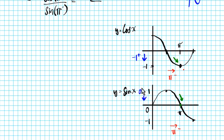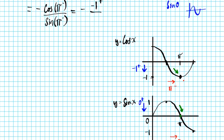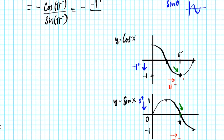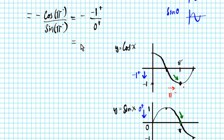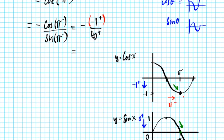So sine of pi from the left is zero from the top, meaning zero from the right. Now we have negative cosine over sine, with a negative sign in front. Distributing the negative: negative one from the right multiplied by negative gives positive one from the left. So we have positive one from the left divided by zero from the right.